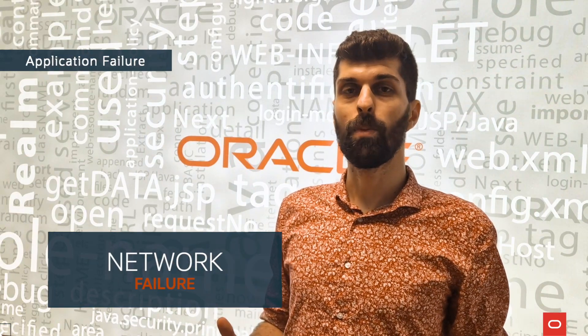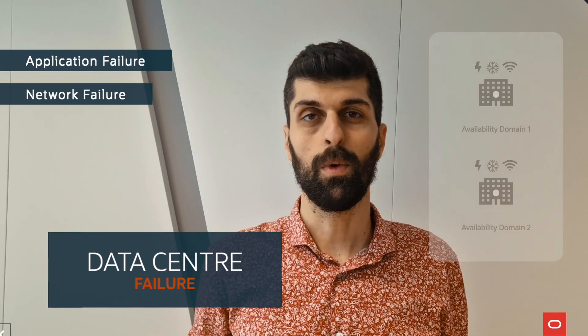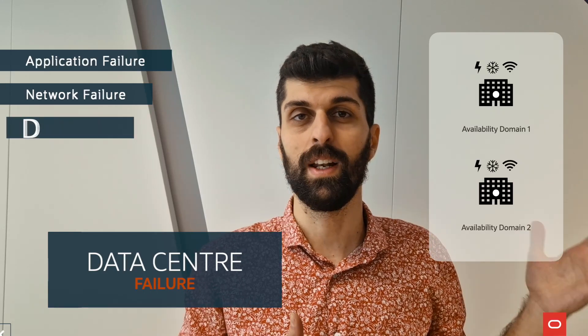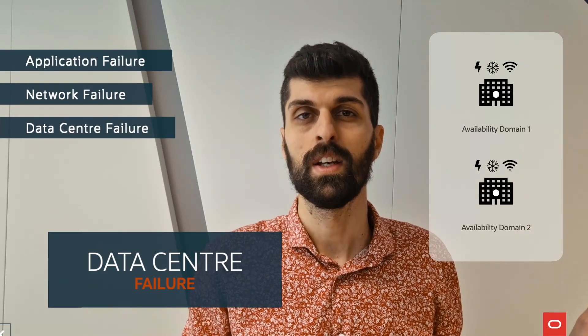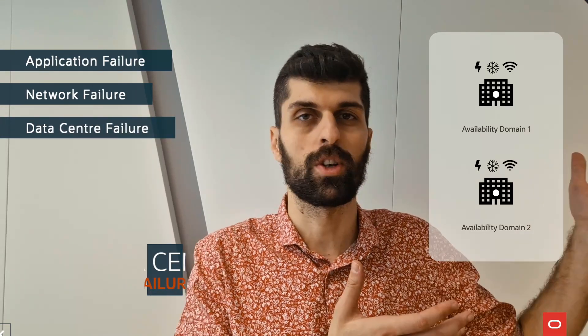Network failure. It is recommended you have sufficient redundancy for your network, like having multiple IPSec VPNs or having both FastConnect and IPSec VPN. Data center failure — some regions have multiple data centers called availability domains, so you can span your resources across them.